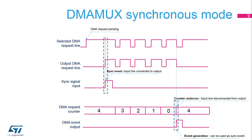When the DMA-MUX channel is configured in synchronous mode, the request multiplexer input indicating a DMA request from the peripheral can become active, but it will not be forwarded on the DMA-MUX request multiplexer output until the synchronization signal is received. When the sync event is received, the request multiplexer connects its input and output and all the peripheral requests will be forwarded. Each DMA request forwarded will decrement the request multiplexer counter. This counter is user programmable. When the counter reaches zero, the connection between the DMA controller and the peripheral is cut, waiting for a new synchronization event.